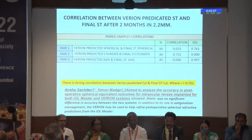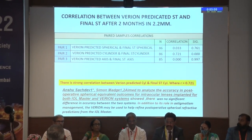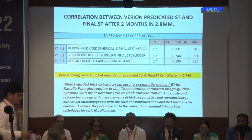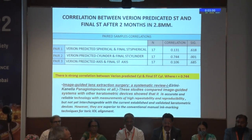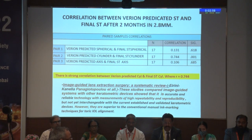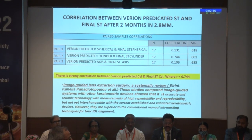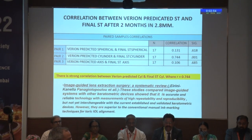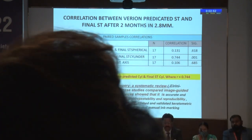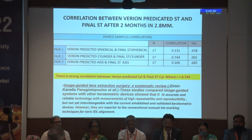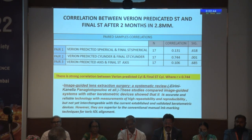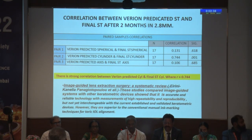The Varion may help to refine the postoperative study for refractive prediction. A similar observation was found in the 2.8 mm group, where there is a strong correlation between the Varion predicted cylinder and the final ST cylinder. The image-guided lens extraction surgery study done by Irini et al. shows the accuracy and reliability of both machines; however, the Varion is very useful compared to conventional manual ink marking techniques for toric IOL management.